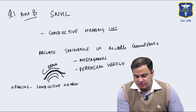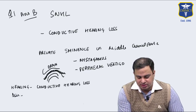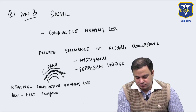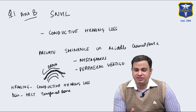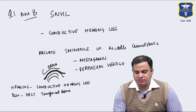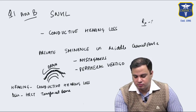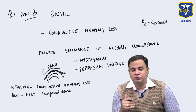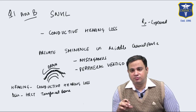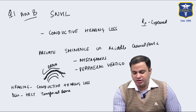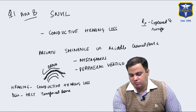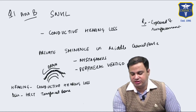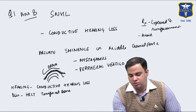The condition can be diagnosed clinically and confirmed by HRCT temporal bone. Treatment involves exploration, where the missing bone covering the superior semicircular canal can be reinstated using cartilage — exploration and reinforcement is the treatment of choice. If the patient is not opting for surgery, they should avoid provoking stimuli.